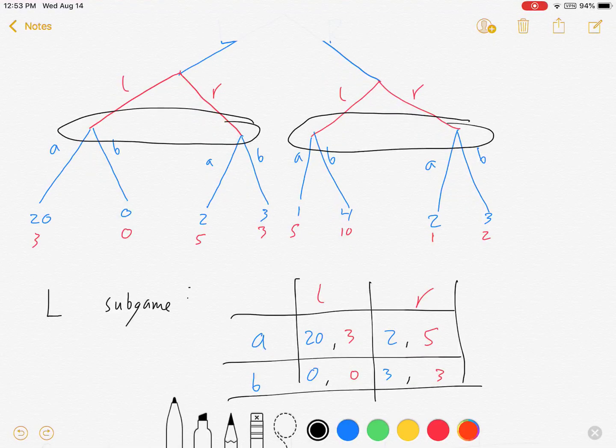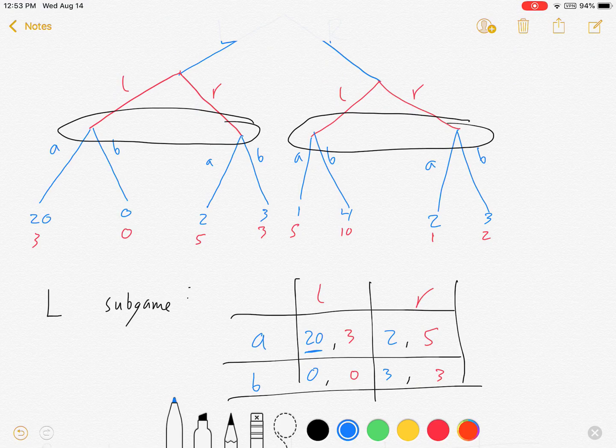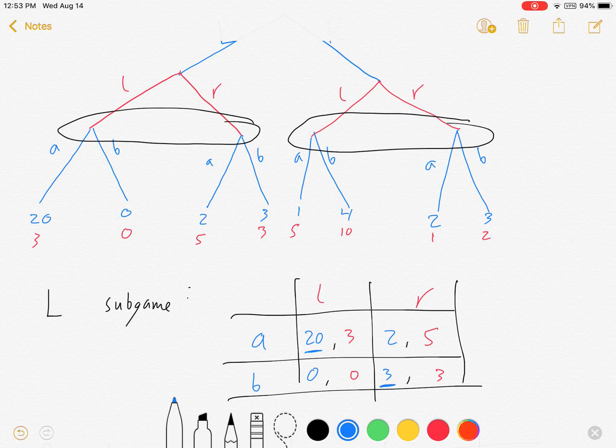So let's solve the game. Let's solve this simultaneous game. If red plays L, blue would prefer A over B. If red plays R, blue would prefer B over A.